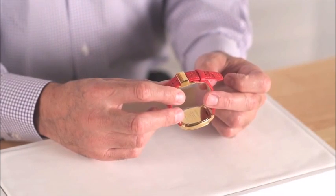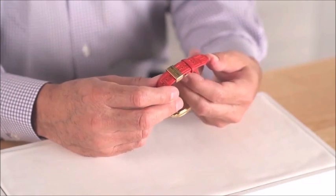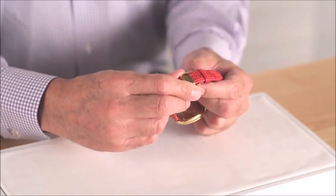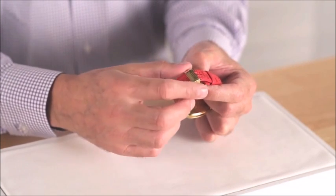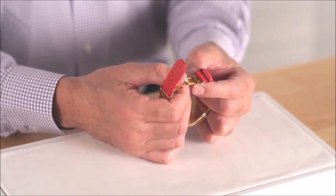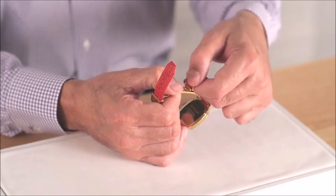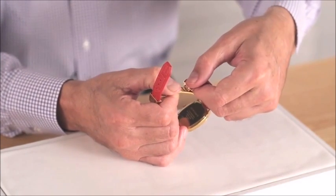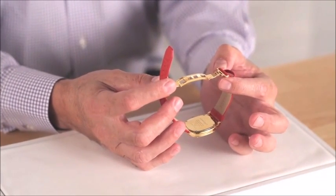When you're ready to take the timepiece off, you simply reverse your action. What you want to do is pull up on the buckle, releasing the buckle portion, slip that out with the leather strap, then hold the deployant clasp with your opposite hand. Slip a finger underneath, pull, and now you've just opened your deployant clasp again.